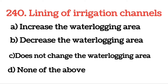Next question: Lining of an irrigation channel decreases the water logging area. अगर हम irrigation channel की lining कर देते हैं तो इससे water logging area घटता है।